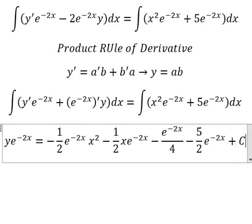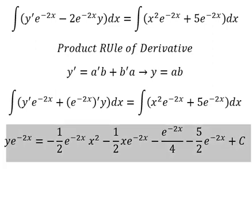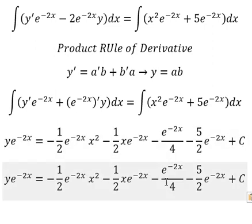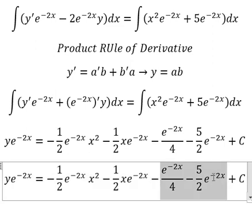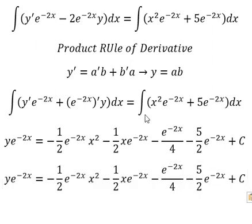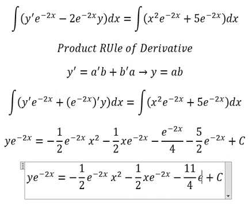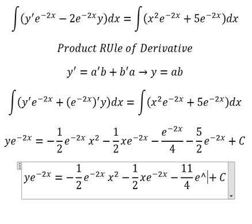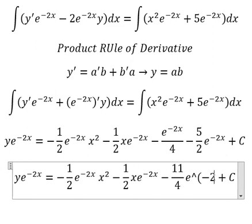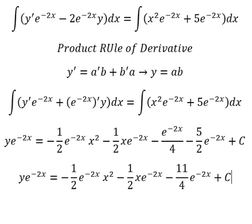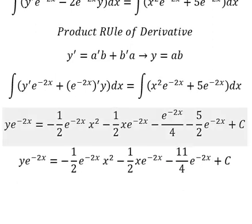So we have negative 5 over 2 times e to the power of negative 2x, and we add the constant C. We can simplify this to get the final answer: negative 5 over 4 times e to the power of negative 2x. This is the end — thank you for watching.